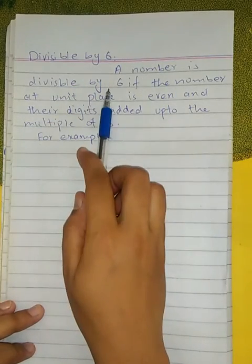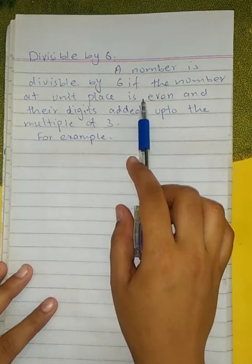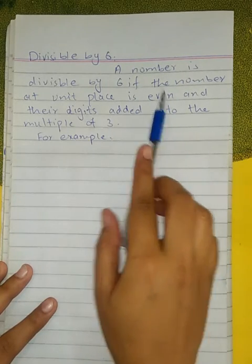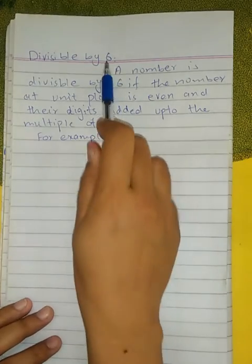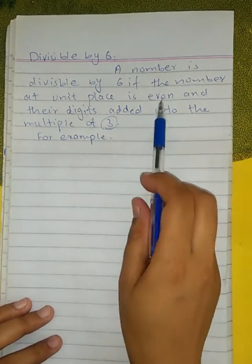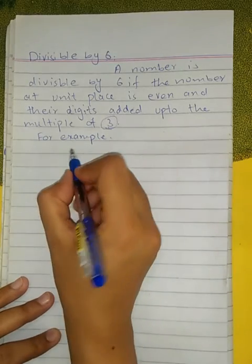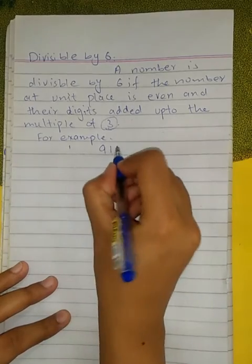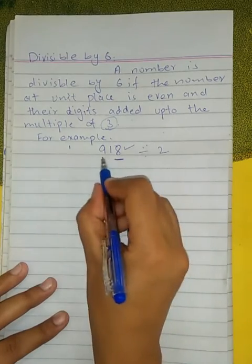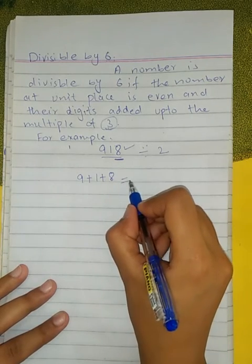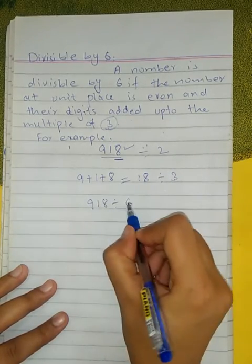Divisibility by 6: a number is divisible by 6 if two conditions are met — first, the ones place has an even number (divisible by 2), and second, the sum of its digits is divisible by 3. For example, 918: the ones place has 8 (even), so it is divisible by 2. Sum of digits: 9+1+8=18, which is divisible by 3. Therefore 918 is divisible by 6.